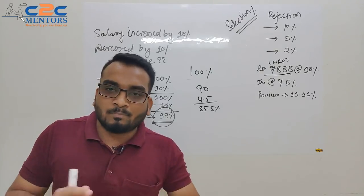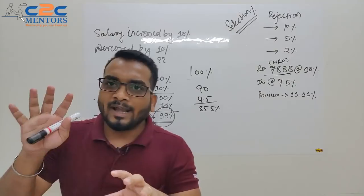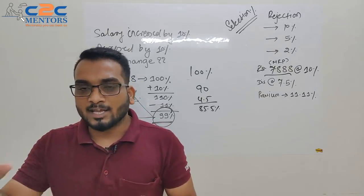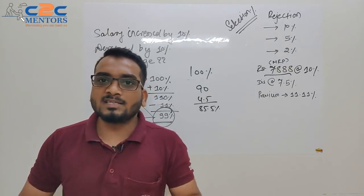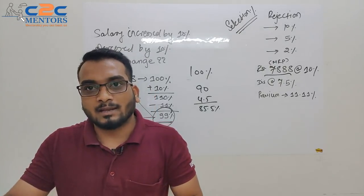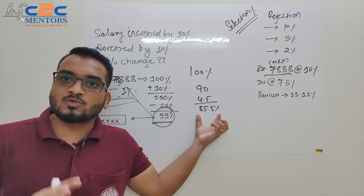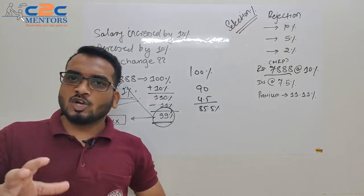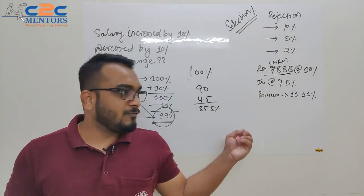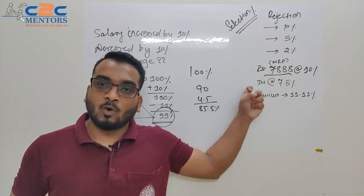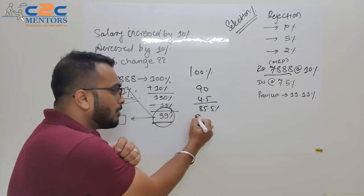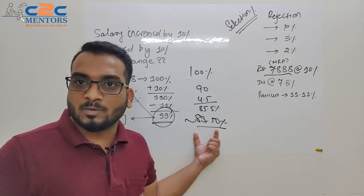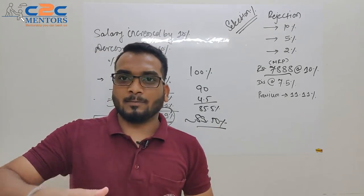Now the problem is that 85.5% ka 2% we need to find. So don't do 85.5 ka 10% which will be around 8.5. So 1% will be 0.85. Now many students have problem here, how to do this? So when 0.85 comes, I take it as 85 paise. So 85 paise plus 85 paise is gonna be 1 rupee 70 paise, means 1.7%. So 85.5% minus 1.7 or let's say close to 2%, that's gonna give you around 83 point something. So your answer should be around 83.